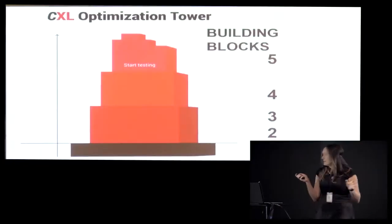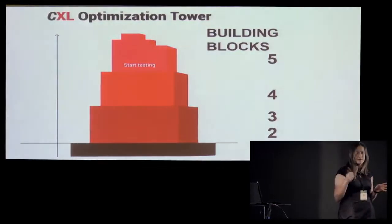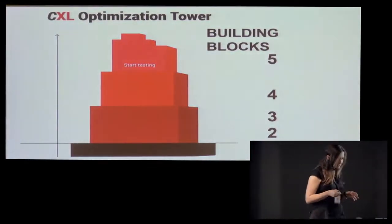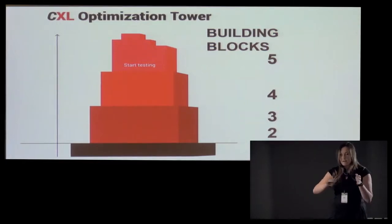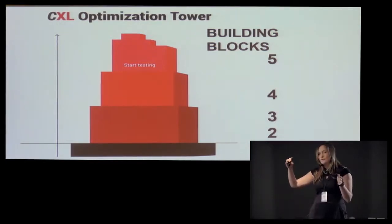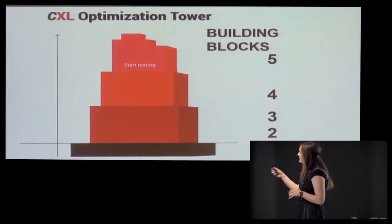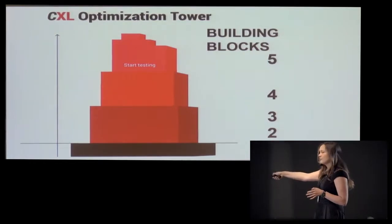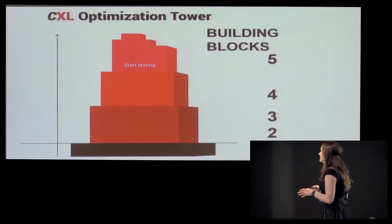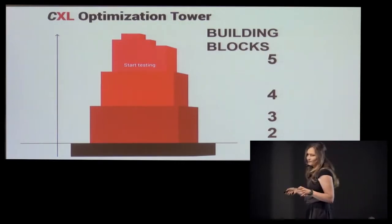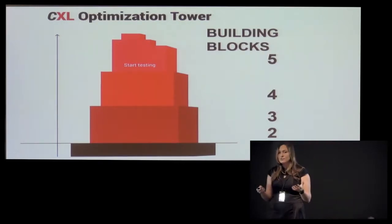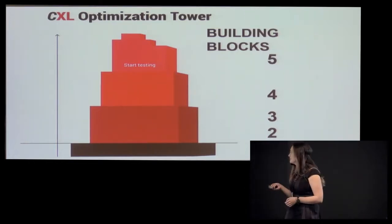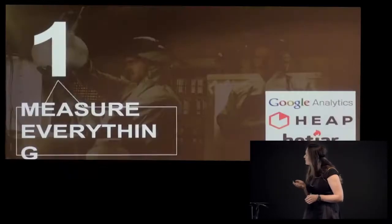That leads us to the five building blocks I'm going to go through. You can think of it as a tower. If you don't have the fundamental, you cannot build the ground floor. If you don't have the ground floor, you cannot go up and build the second floor. There are four layers you need to do before you can start any A/B testing at all. That's something you should do when you go back to your office and you have a low-traffic site and want to build up your optimization plan.